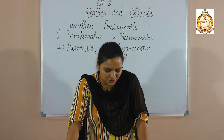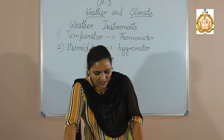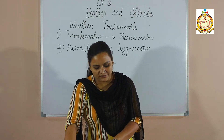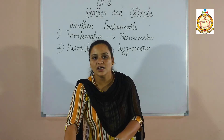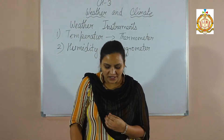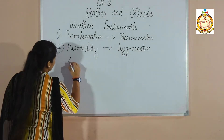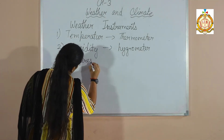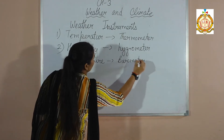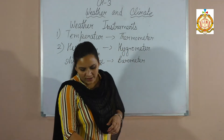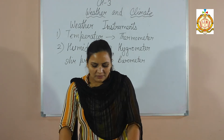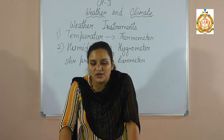Now the next thing is air pressure — how we can measure air pressure. Atmospheric pressure is the pressure exerted on a unit area on the earth's surface by gases present in the air, and the weight exerts pressure on the surface of the earth. Barometer is the instrument we use to measure air pressure. The picture of the barometer is given on page number 31. Barometer is also called the mercury barometer.